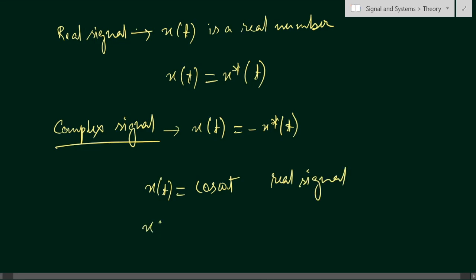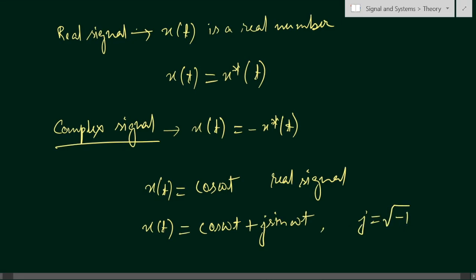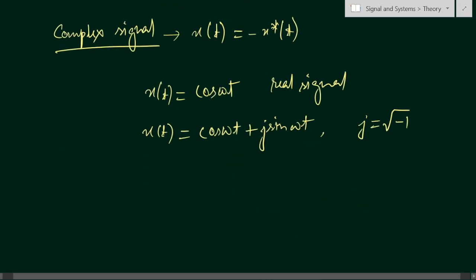For example, if x(t) equals cos(ωt), it has no imaginary part — this is a real signal. But if x(t) equals cos(ωt) plus j·sin(ωt), where j equals the square root of minus one, then it is a complex signal. The complex conjugate x*(t) would be cos(ωt) minus j·sin(ωt), which is not equal to x(t).